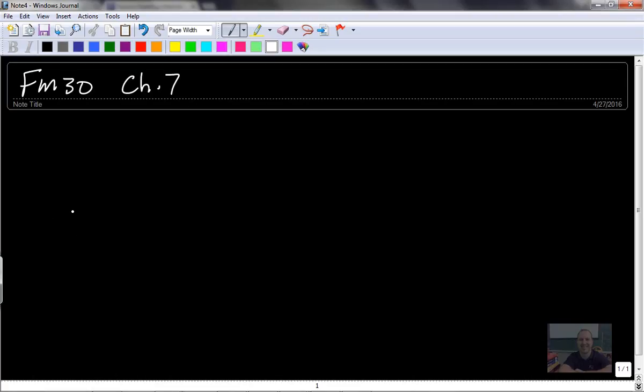All right, so Foundations 30, Chapter 7, we are beginning today, and 7.1 is exploring characteristics of exponential functions.